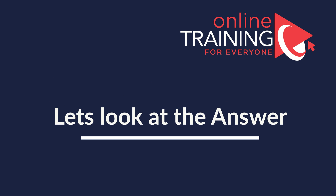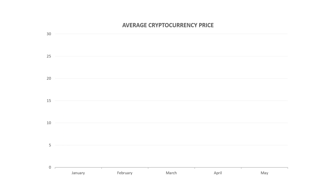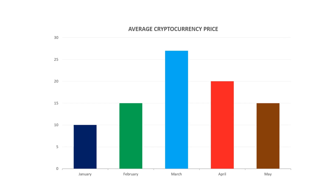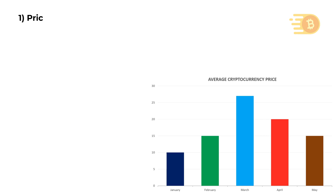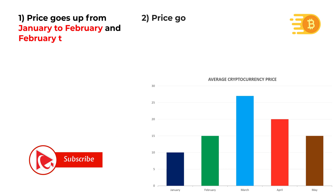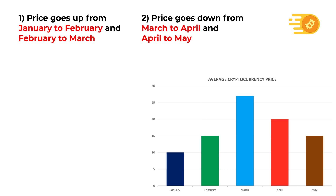For this challenge we need to analyze the chart first. There are only two consecutive months with price increases: price goes up from January to February, and from February to March. Price goes down from March to April, and from April to May as well.